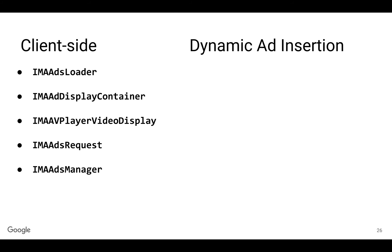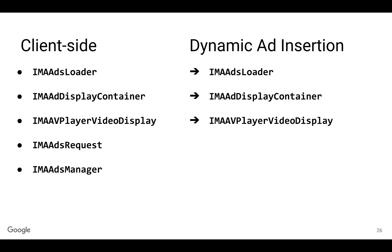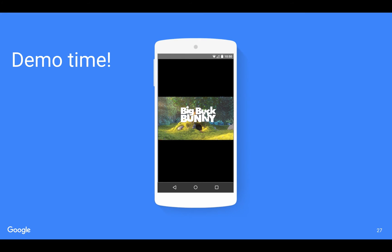To summarize: on the left we have our usual suspects from the client-side implementation — ads loader, ad display container, and so on. On the right, we have the DAI implementation. We're reusing ads loader, ad display container, and AV player video display. But instead of using the ads request class, we have a new stream request for DAI. And instead of the ads manager, we're using a new stream manager to manage our DAI streams. Now let's see a demo of how this actually works in a real working iOS app.